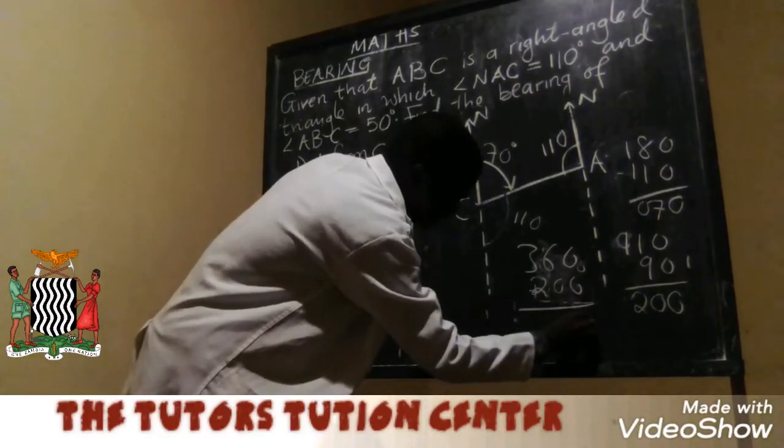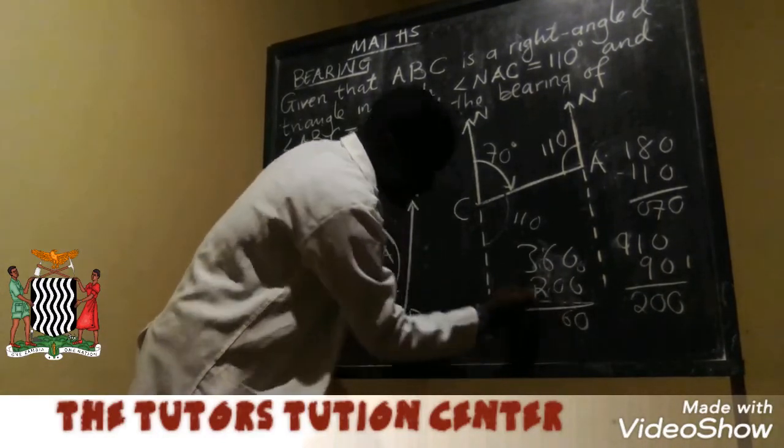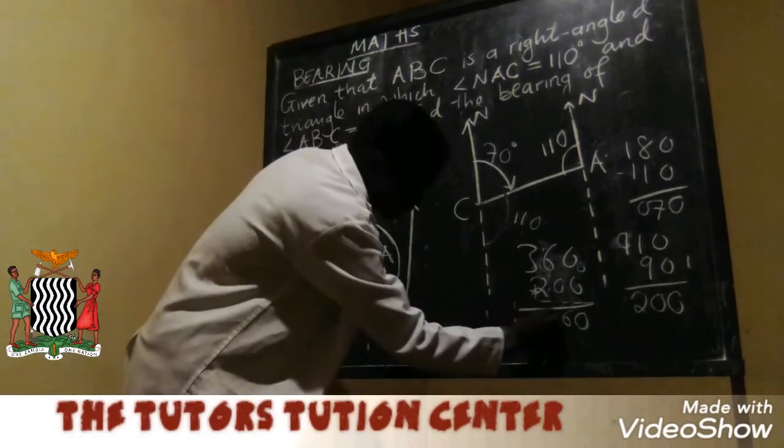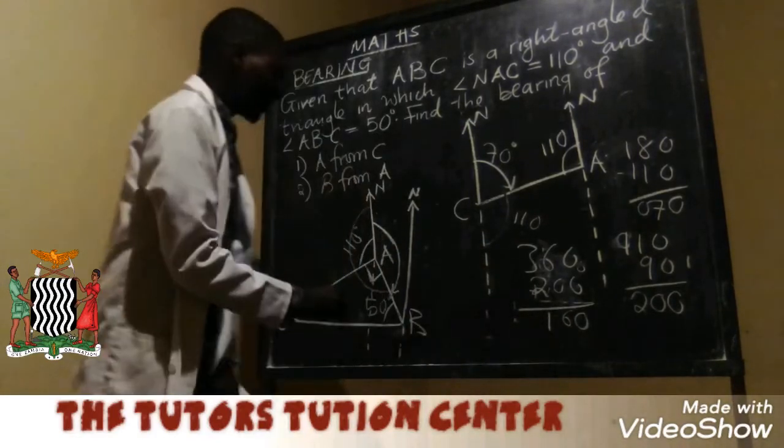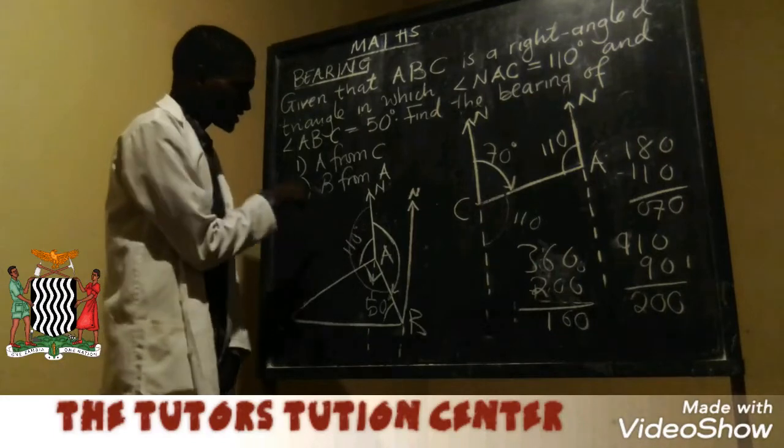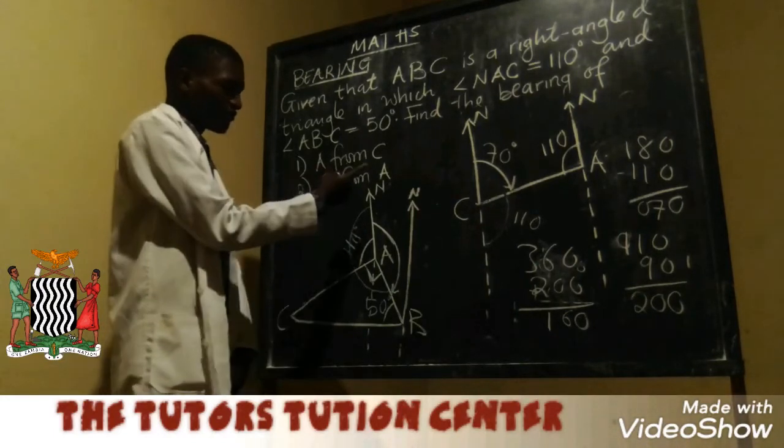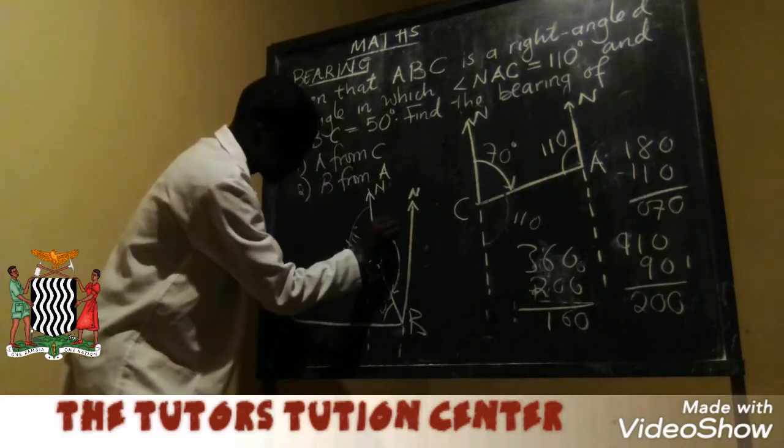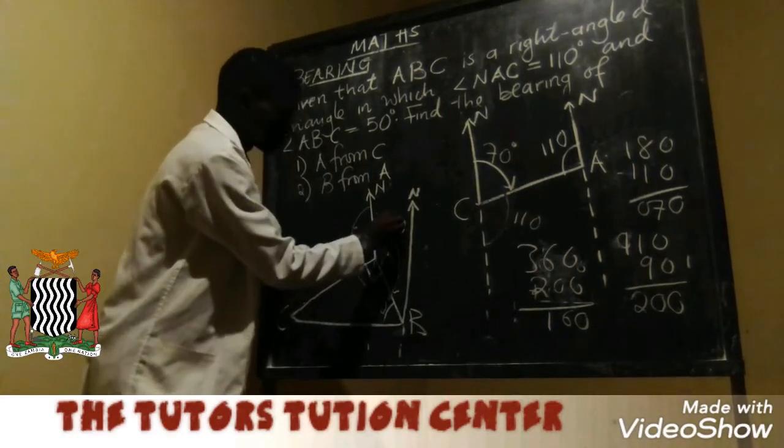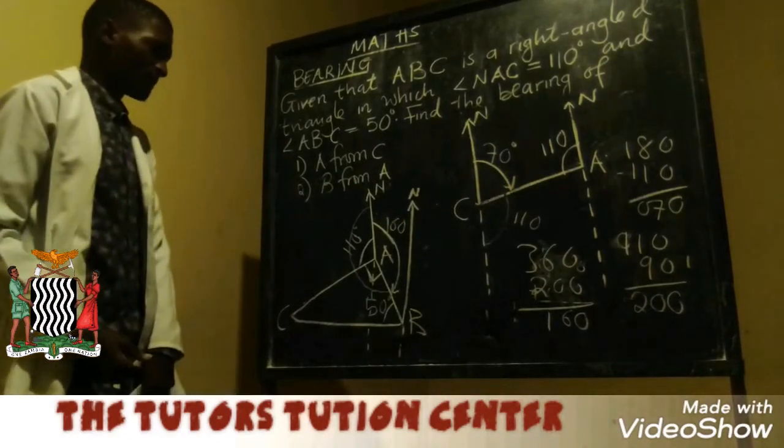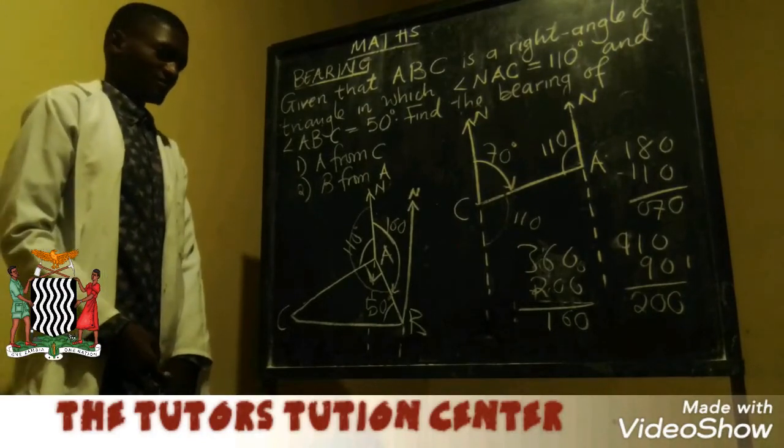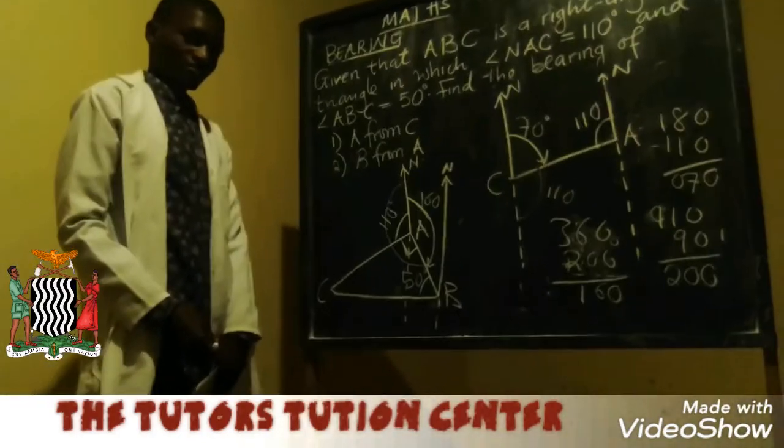So we have 0, we have 6, 3 minus 2 we have 1. So meaning the angle that we want to find, which is the bearing of B from A, is what is each year. The bearing of B from A is each year. Thank you.